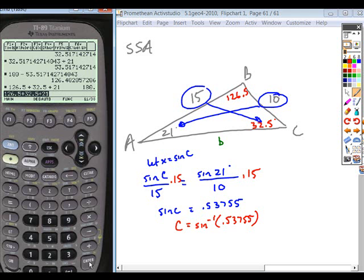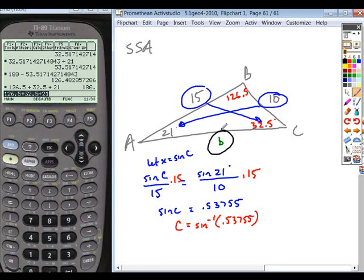Once we have these angle measures, we can now solve for B. And so the setup for solving B is we begin with our unknown. So B over the sine of the angle opposite it, sine of 126.5, is equal to... Now, which of these pairings is going to be the most accurate? Good, so 21 and 10. So 10 over sine of 21.